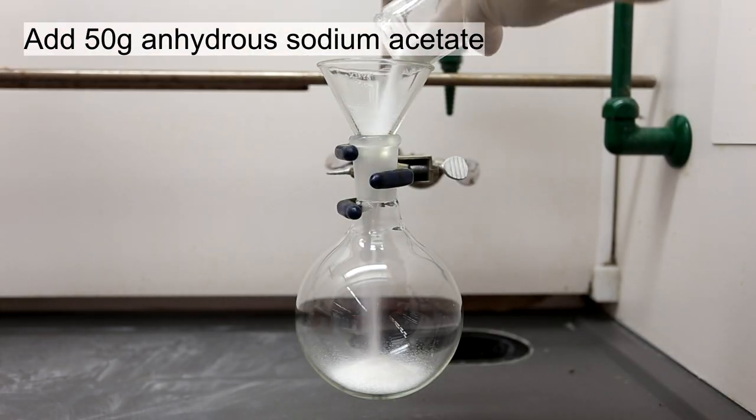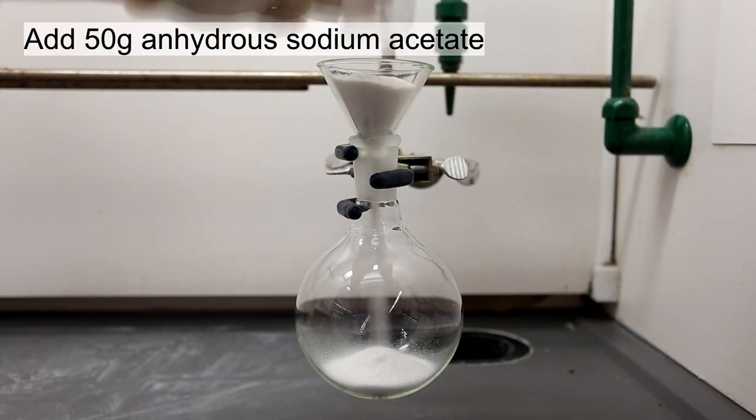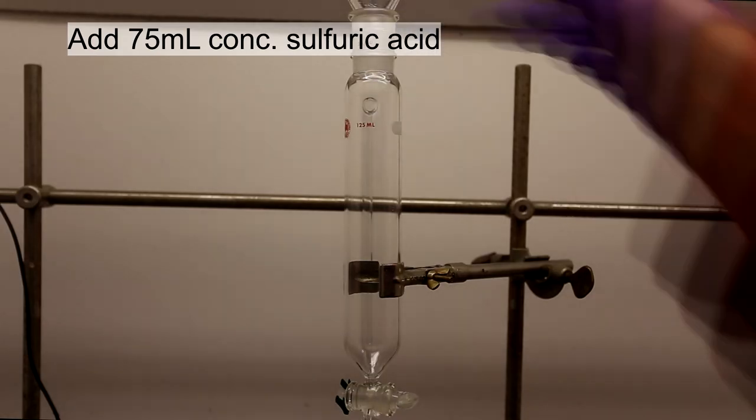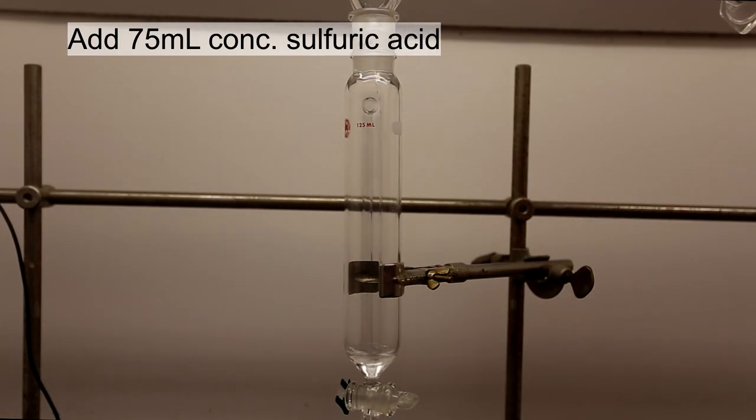First, a round-bottom flask was charged with 50 grams of anhydrous sodium acetate. Next, to an addition funnel, 75 milliliters of concentrated sulfuric acid was added.